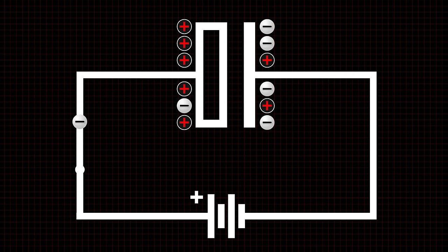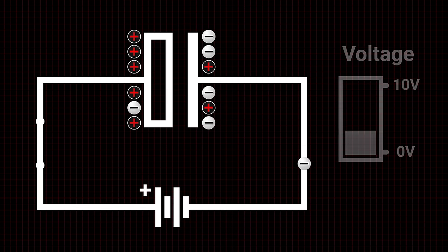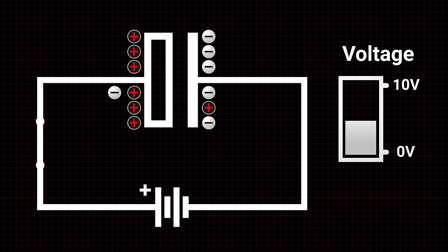The dielectric material prevents electrons from flowing between the plates. This buildup and release of electrons creates a difference in potential or voltage between the plates, and continues until the capacitor reaches the same voltage potential as the power source.